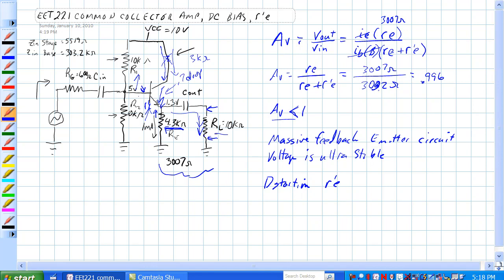Since R prime E is such a 25 ohms of this, R prime E is so small. R prime E changes with the amount of current going through the base to emitter junction. If R prime E is so small compared to the load...